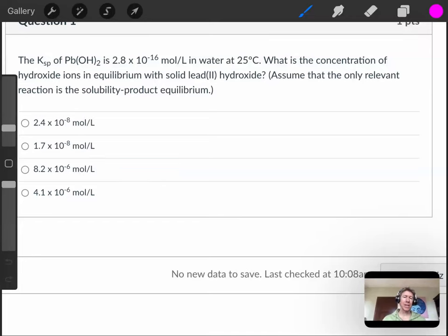This one asks about Ksp, another type of Kc equilibrium constant. It's the solubility product constant.